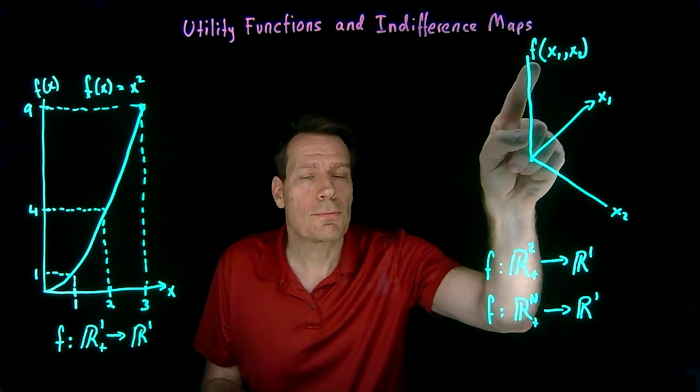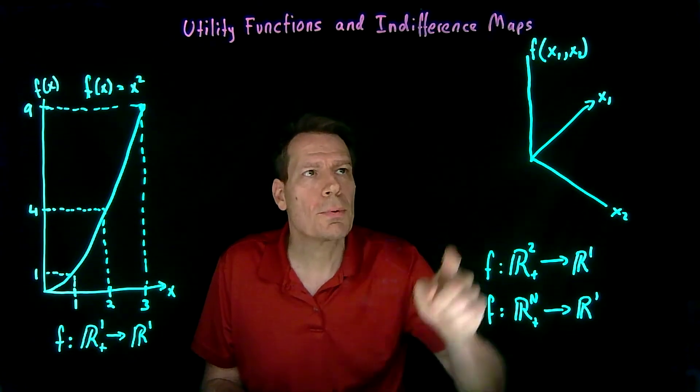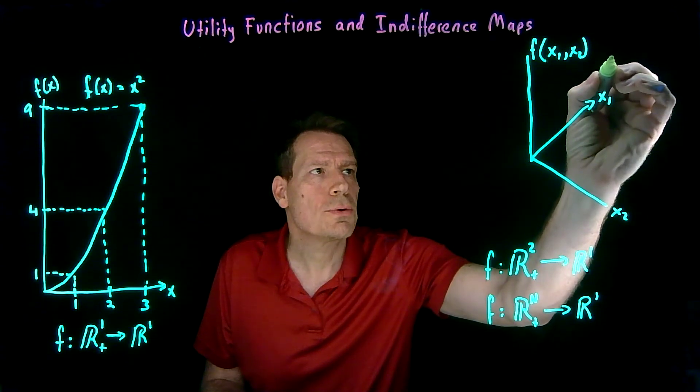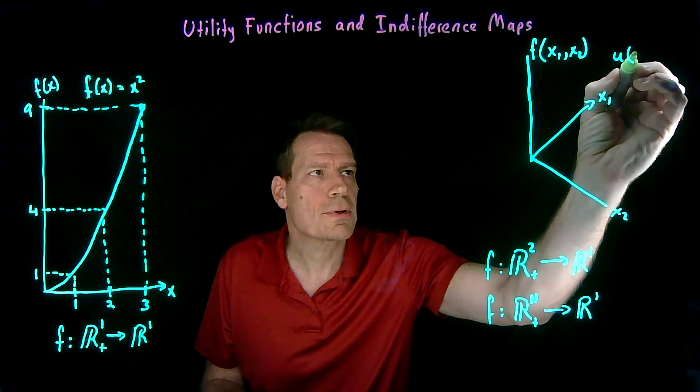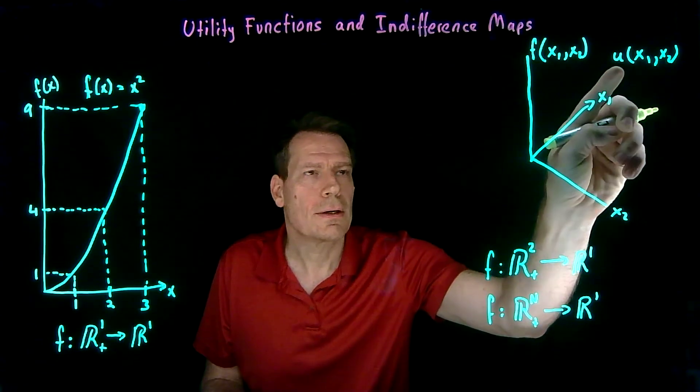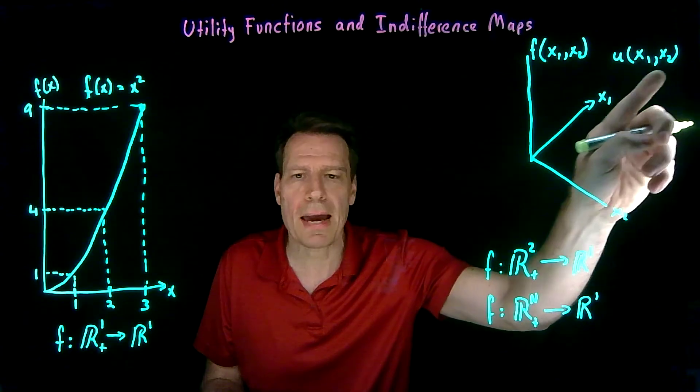In that case, the rule, the function, would be a utility function. Only now we wouldn't use f, but to indicate that it's a utility function, we'd use u to represent the function. So we would write the function as the utility of x1 and x2, the utility of that basket of goods.